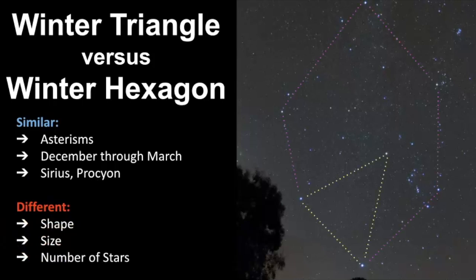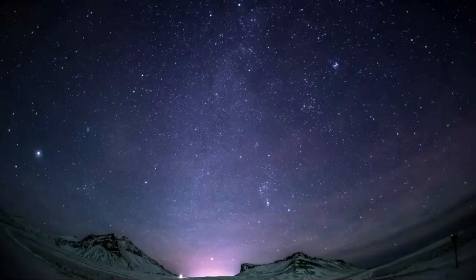I encourage you to go outside, try to find these asterisms, and use them to help you find all the constellations in the winter sky. It really is a brilliant time to go outside and see the stars, even if it's cold. Remember, anytime you go outside you have to take time to observe — it takes patience, practice, and persistence. Good luck, and as always, keep looking up.